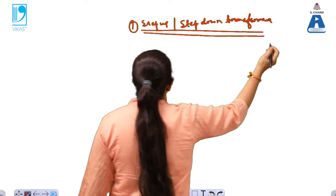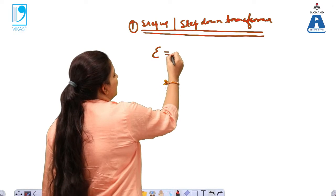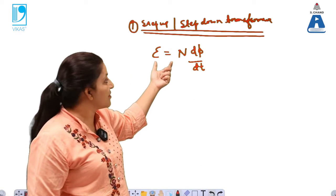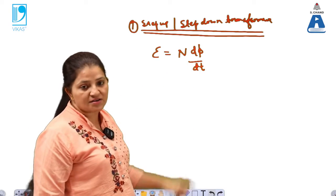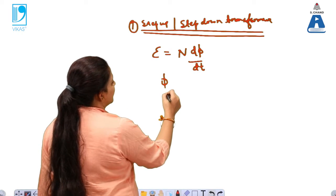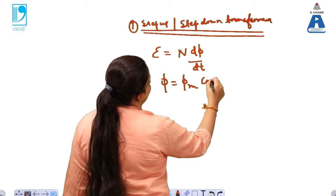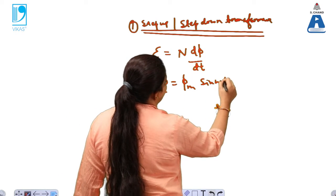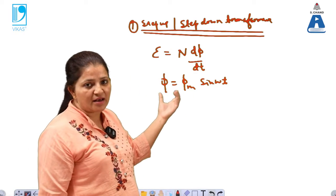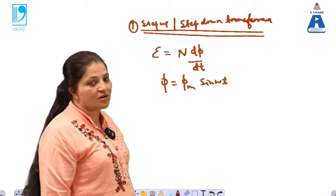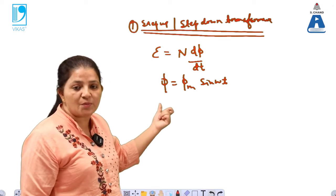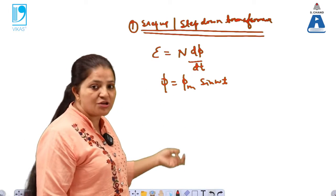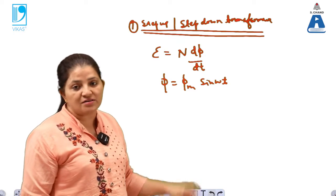In order to understand this, we know that the EMF in the transformer is given by the relation e = N · dφ/dt. Here, e is the EMF of the transformer, N is the number of turns, and φ is the flux. The input voltage is supplied, which causes current to flow; this current induces an EMF, which in turn induces another current, giving us the output voltage. So the input is electrical and the output is also electrical, and the transformer operates in a static condition.